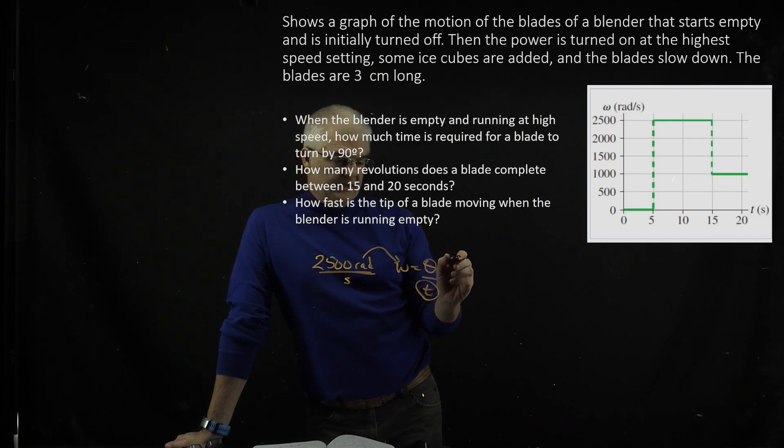And 90 degrees in radians is going to be π over 2, or 0.5π.